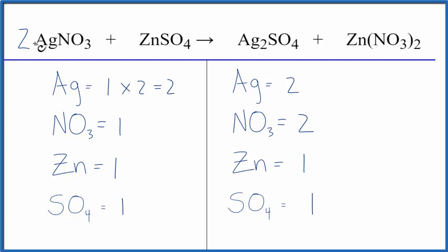And the two, it applies to everything here in this silver nitrate. So we have the one nitrate times the two, that gives us two, and those are balanced and we're done.